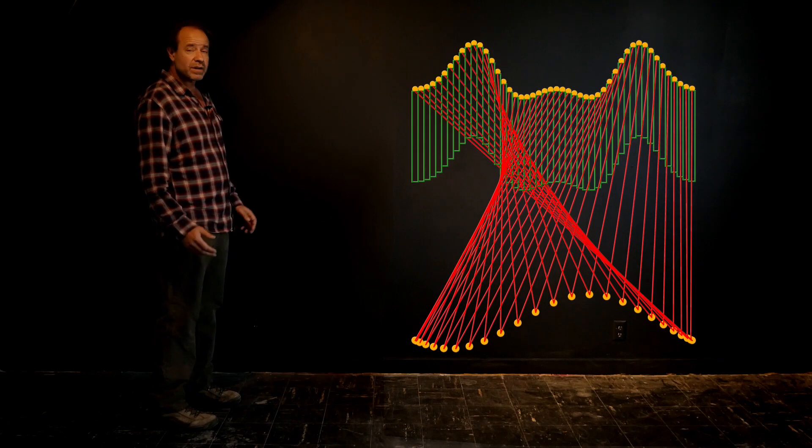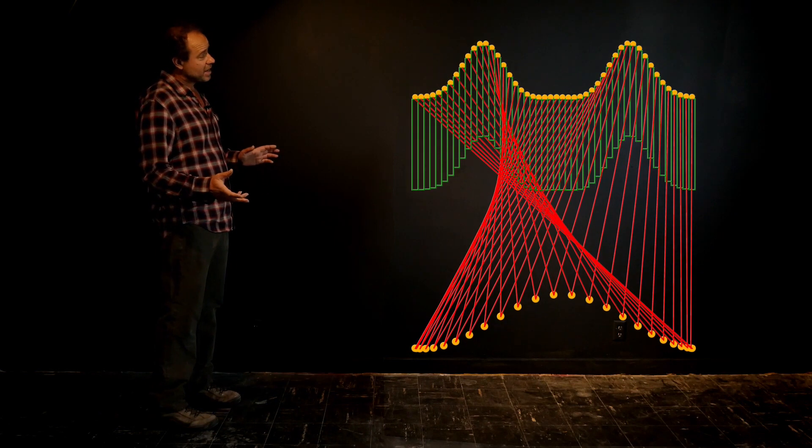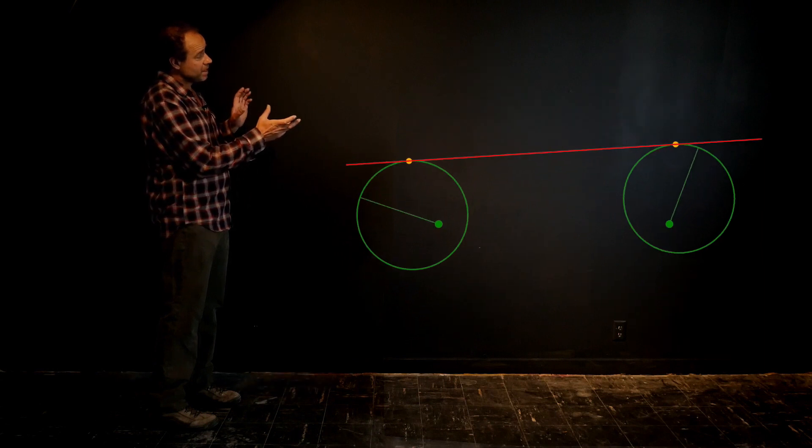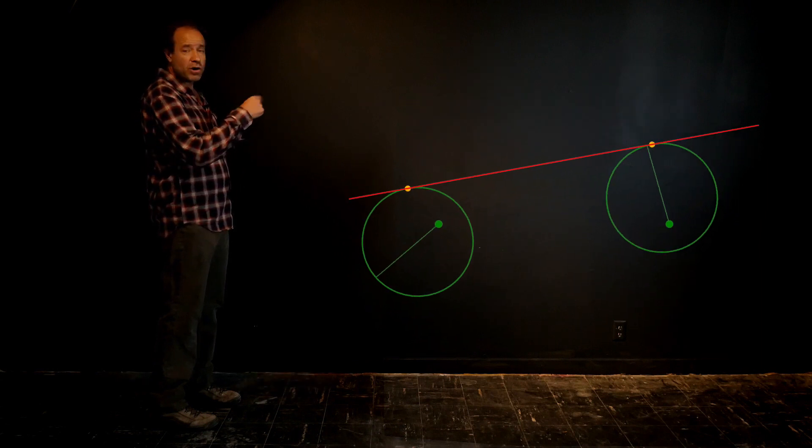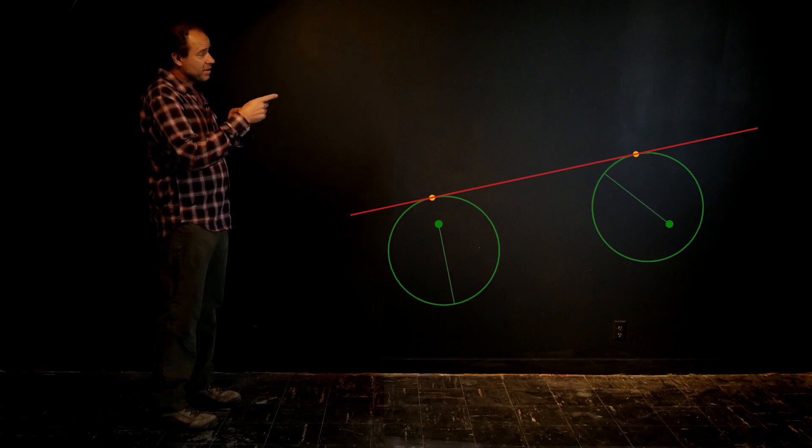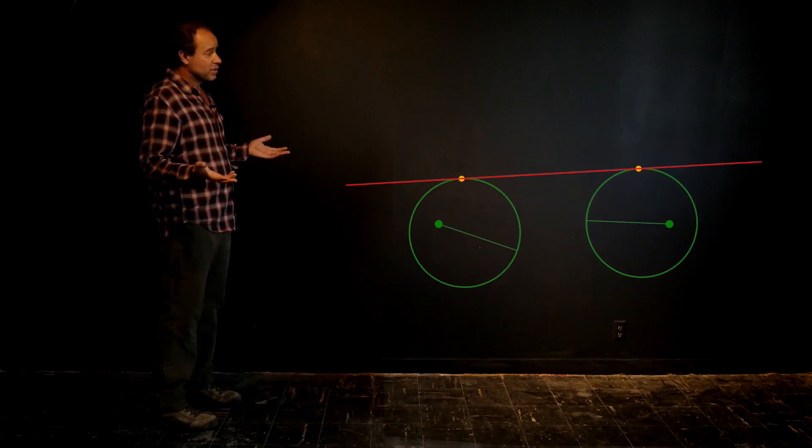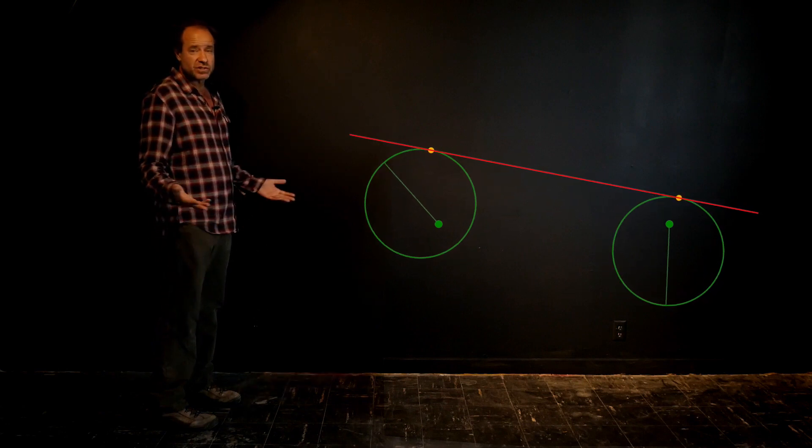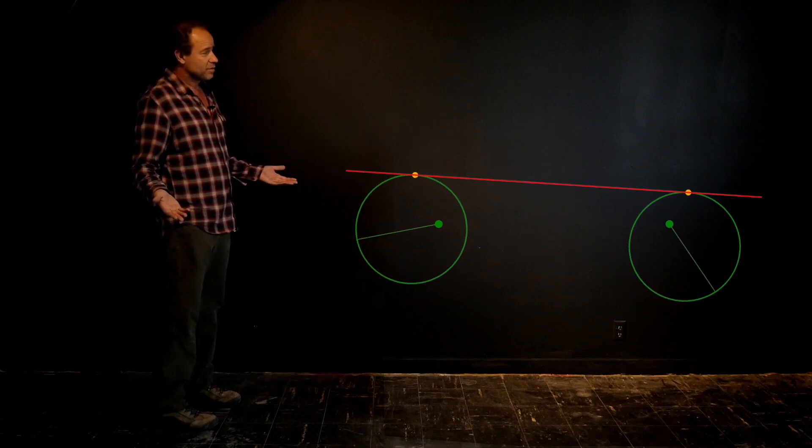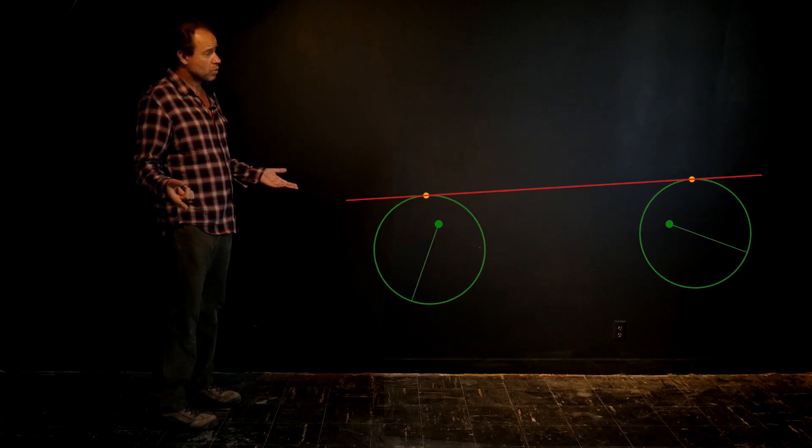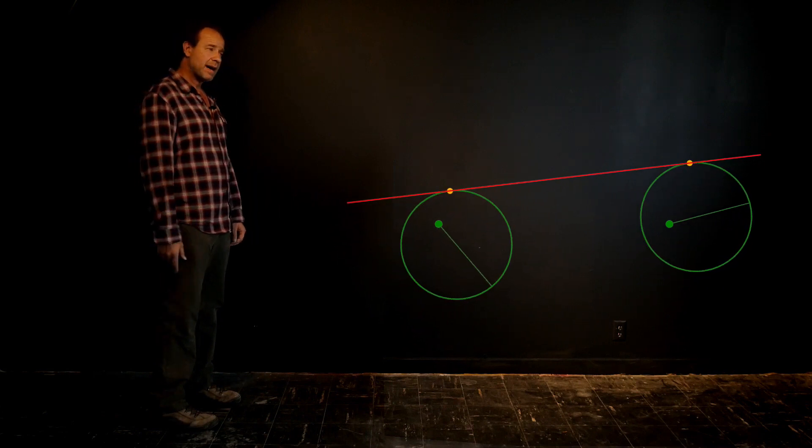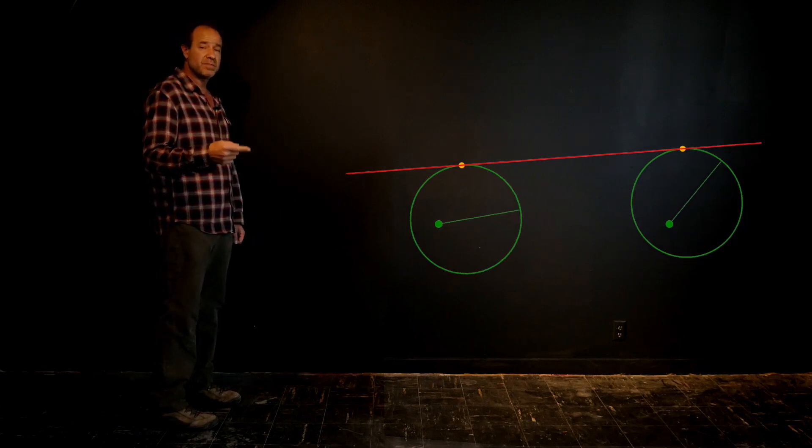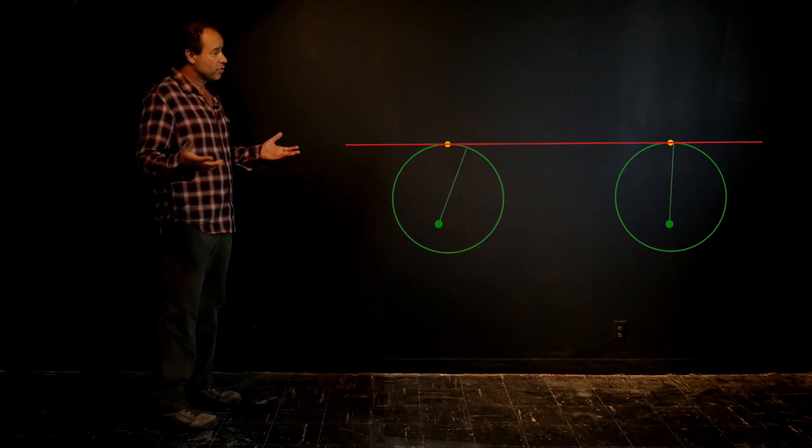And the way that we're going to add the movement together is if you imagine you have two circles, and there's a bar going across them, then the midpoint of that bar is the average of the two heights, and the average is the sum, so they're being added up, divided by two. So since it's being divided by two, I'm going to be looking for an excuse later to magnify the movement.